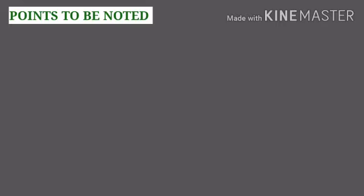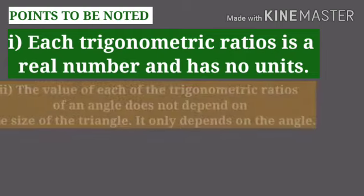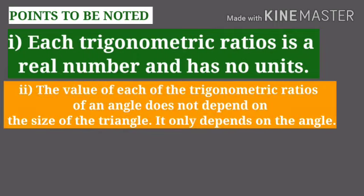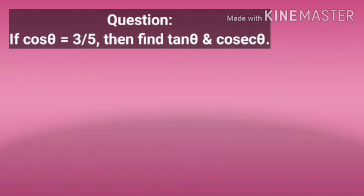Number one: each trigonometric ratio is a real number and has no unit. Number two: the value of each of the trigonometric ratios of an angle does not depend on the size of the triangle — it only depends on the angle. Number three: if one of the trigonometric ratios of an acute angle is known, then the remaining trigonometric ratios of that angle can be easily determined.